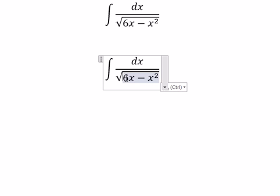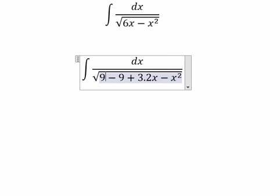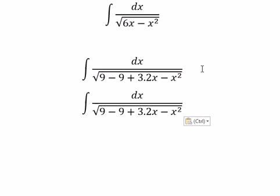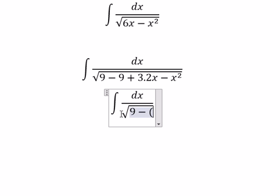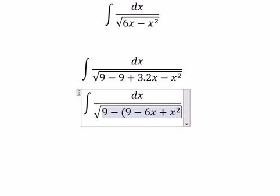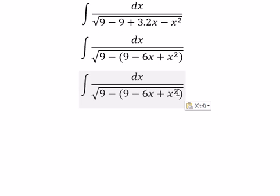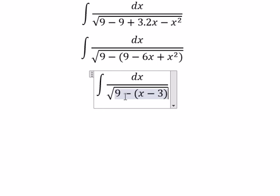About 6x, we put 3 multiplied with 2. So in this situation we need to have negative 9. That means we need to have positive 9. So we can put this inside the bracket and we got 9 minus 6x plus x to the power of 2. Next, we got x minus 3 to the power of 2.